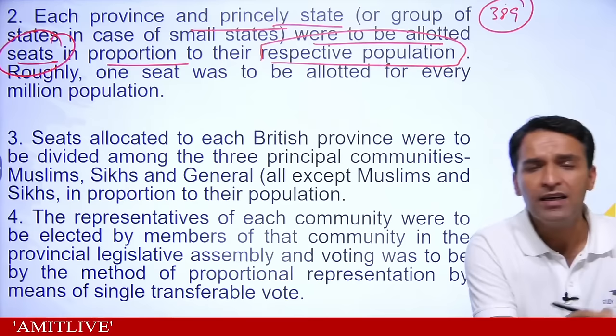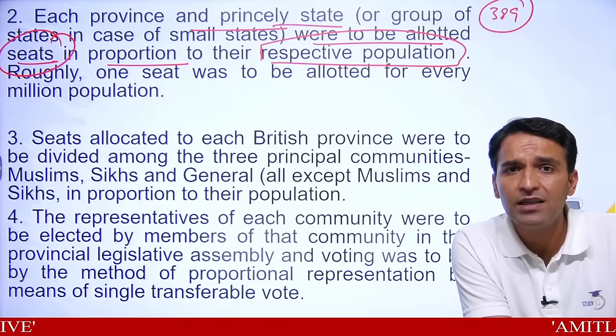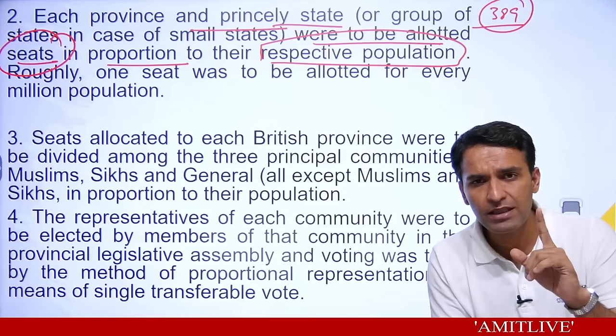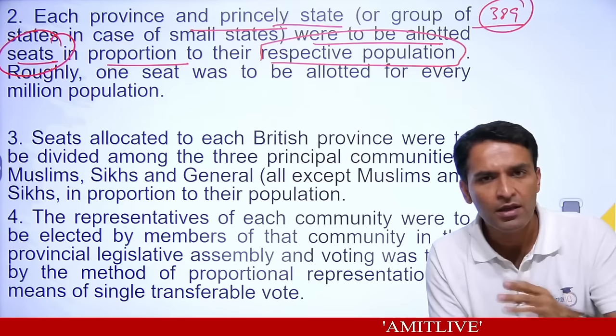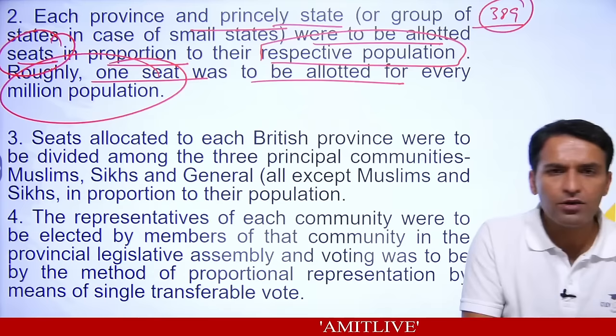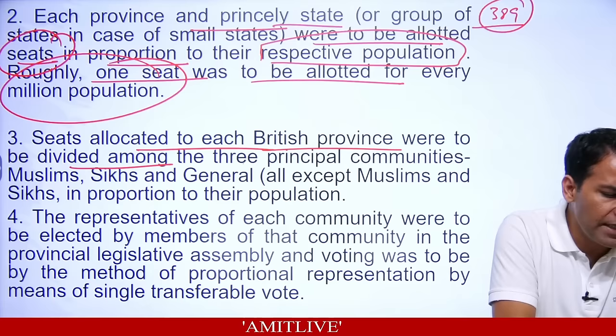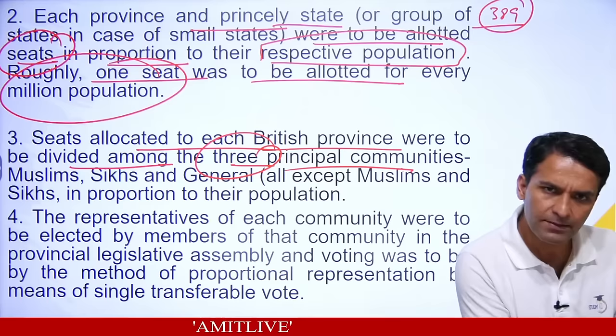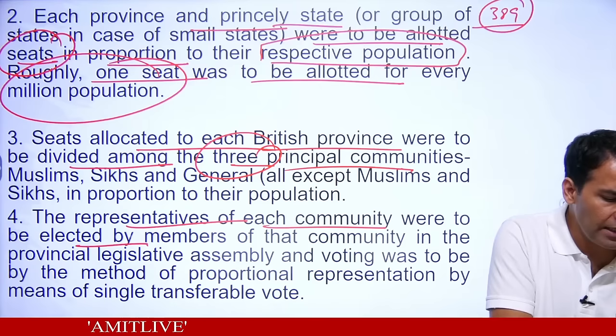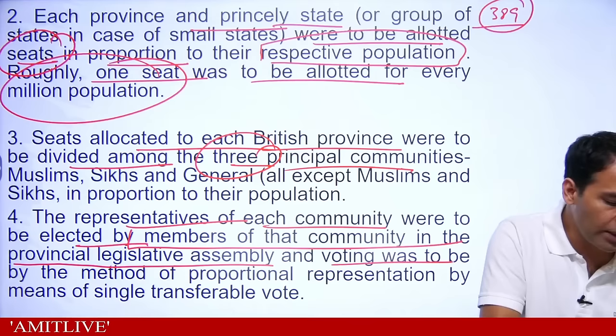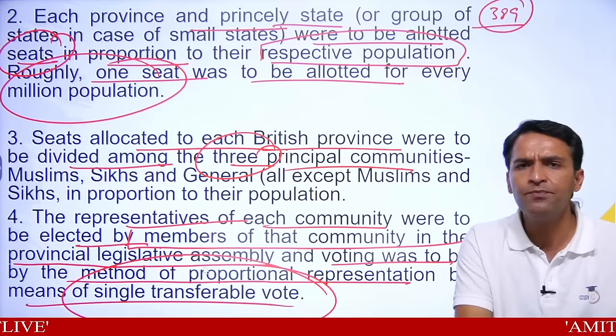When the provincial assembly was being formed in 1946, our country's total population was about 38.9 crore, so roughly one Constituent Assembly seat per 10 lakh citizens. Seats allocated to British provinces were divided among three principal communities — Muslims, Sikhs, and the general category. Representatives of each community were elected by members of that community in provincial legislative assemblies by proportional representation using a single transferable vote.